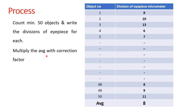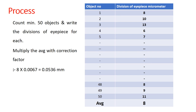Suppose the average comes out to 8 eyepiece divisions. Multiply this average by the correction factor: 8 × 0.0067 = 0.0536 mm. There is no need to multiply each individual measurement by the correction factor — just take the average first, then multiply by the correction factor at the end.